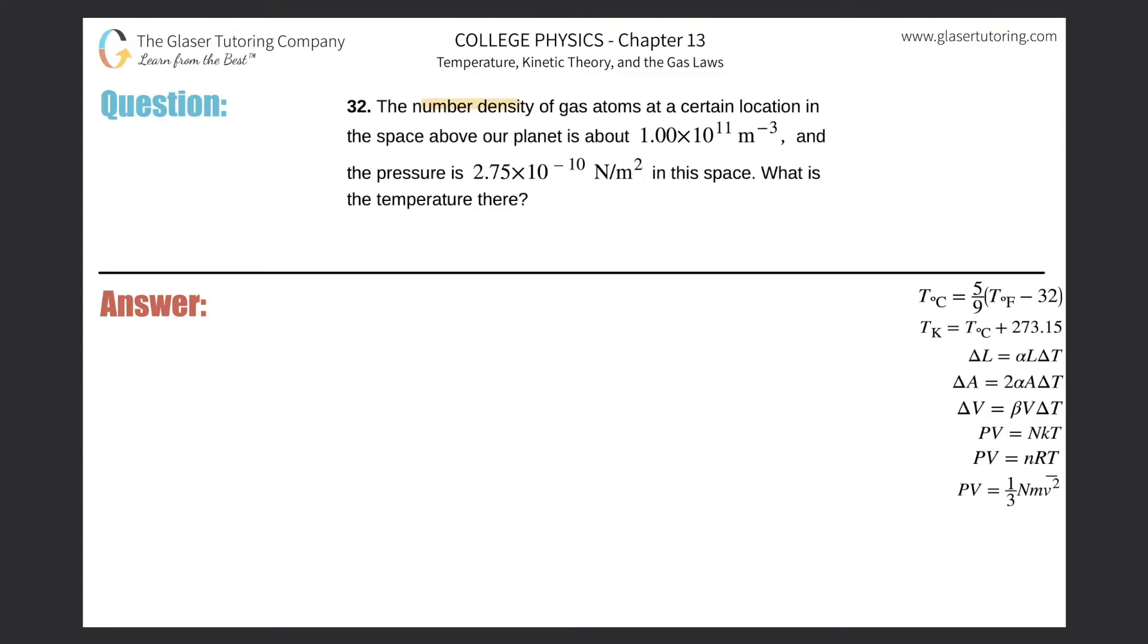Number 32. The number density of gas atoms at a certain location in the space above our planet is about 1×10^11 atoms per meter cubed, and the pressure is 2.75×10^-10 newtons per meter squared in the space. What is the temperature?